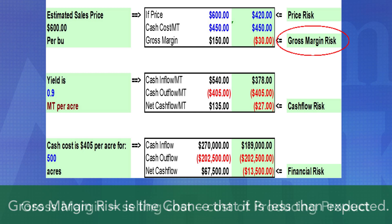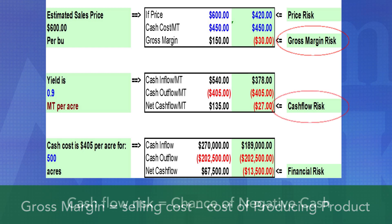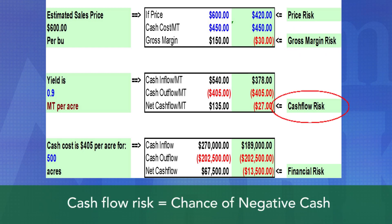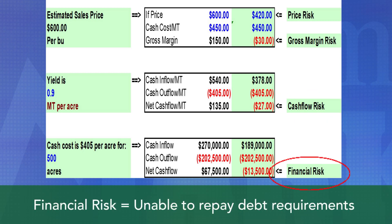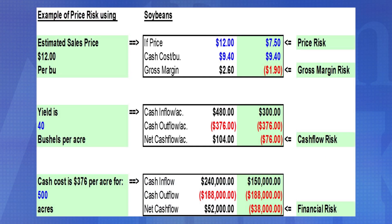Gross margin is the difference between the selling cost per unit of the final product and the cash or direct costs of purchasing that unit, which will lead to a cash flow risk — the chance that the cash flow might be negative — and eventually leads to a financial risk, which is the chance that the farm operation will be unable to repay its debt requirements. In our soybean example, where we see the price of beans at $12.00 dropping to $7.50 a bushel, that's your price risk, which leads to a negative cash flow and eventually to a financial risk.